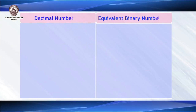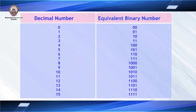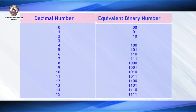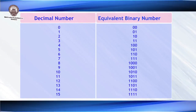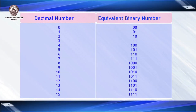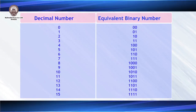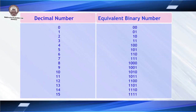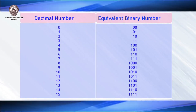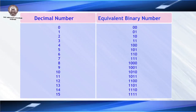Likewise, we can calculate the weight of other binary numbers. Now let us look at a slide showing decimal numbers and their equivalent binary numbers. We can see that 0 is represented as 0, 1 as 1, 2 as 10, 3 as 11, 4 as 100, and 5 as 101. Similarly, we can see the equivalent binary numbers for decimals 0 to 15.